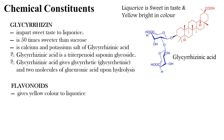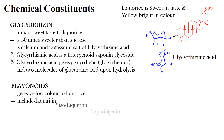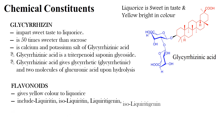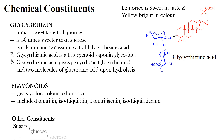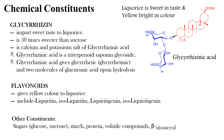Coming to flavonoids: flavonoids give yellow color to liquirice. The flavonoids of liquirice include liquiritin, isoliquiritigenin, liquiritigenin, and isoliquiritigenin. Liquirice also has other constituents such as sugars including glucose and sucrose, starch, protein, volatile compounds, and phytosterol.